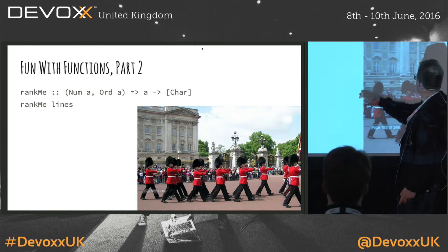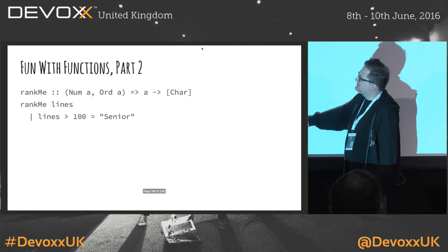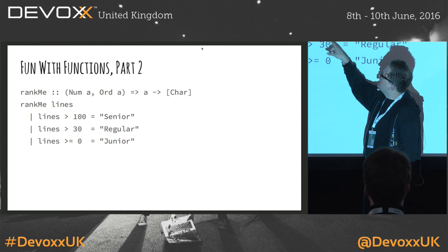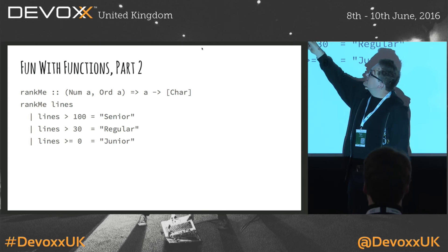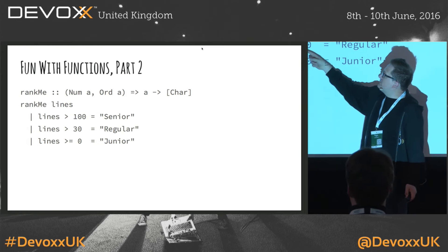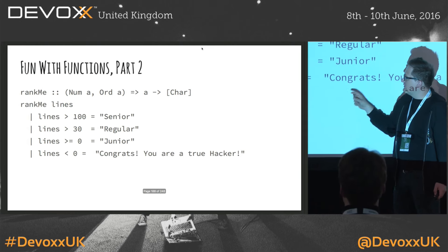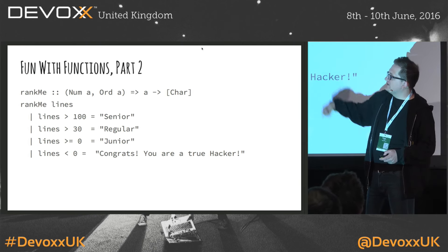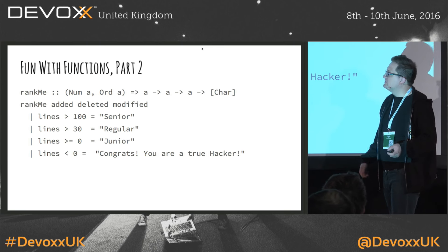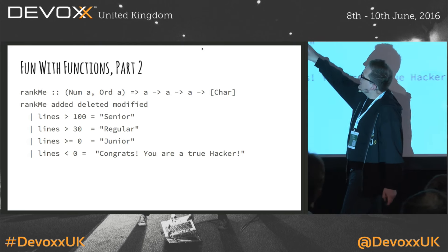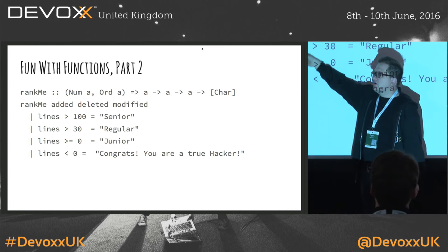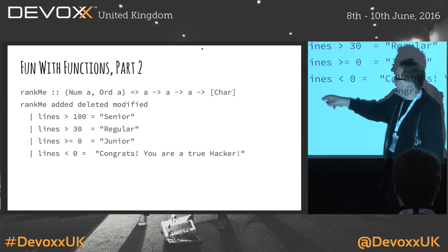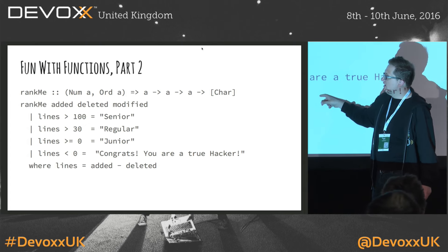So let's say we have to implement that method anyway — it takes a number and provides a ranking based on lines contributed. There is another way to do pattern matching called guards. There's no longer an equal sign here — instead, we have a pipe symbol stating different pattern matchings, each evaluating a boolean expression. If lines are bigger than 100, then senior developer; between 30 and 100, regular; between 0 and 30, junior; and if less than zero, you're a hacker. The developers were also given three arguments: added, deleted, and modified lines. The 'lines' value is defined using a 'where' clause at the end — this is more readable because you see the main function body first, and helper definitions below.